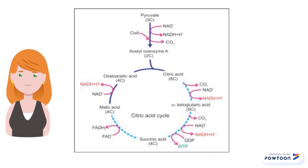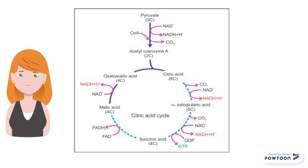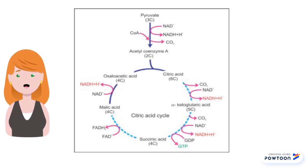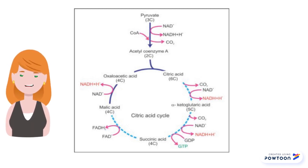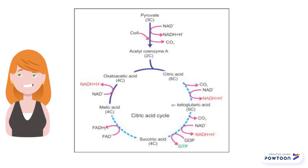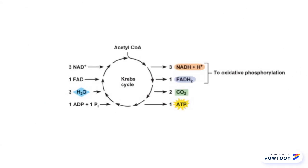Now, the acetyl-CoA, along with oxaloacetate, form a six-carbon molecule citrate, which is then converted to a five-carbon molecule, which is then reduced to another four-carbon molecule, then two malic acid is recycled back to oxaloacetate.